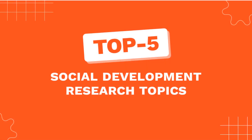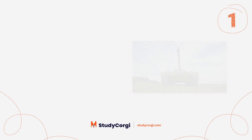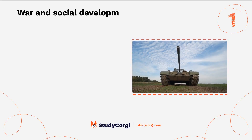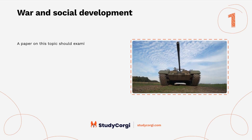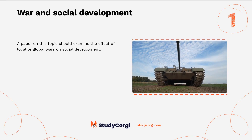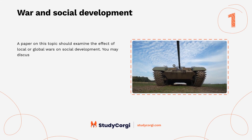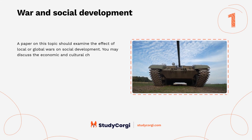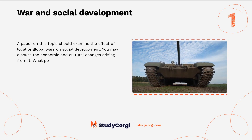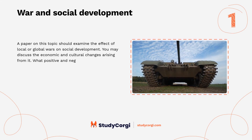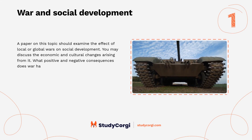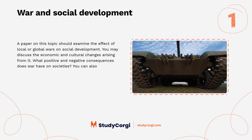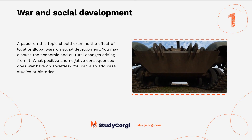Top five social development research topics. War and social development: a paper on this topic should examine the effect of local or global wars on social development. You may discuss the economic and cultural changes arising from it, what positive and negative consequences war has on societies, and you can also add case studies or historical examples.